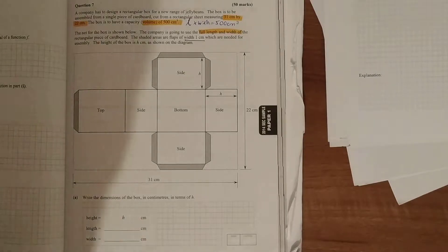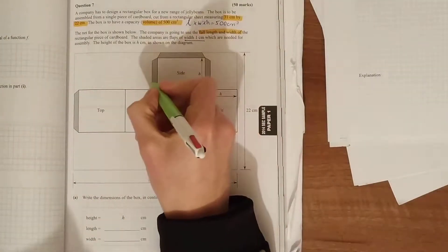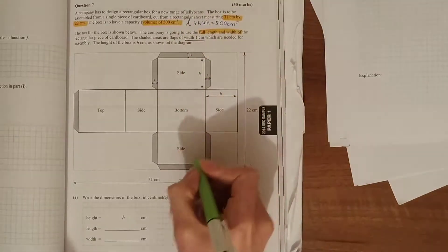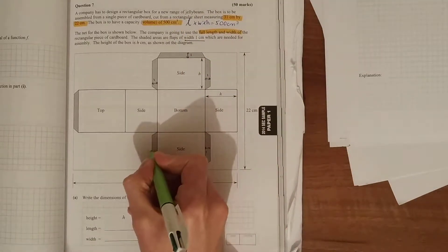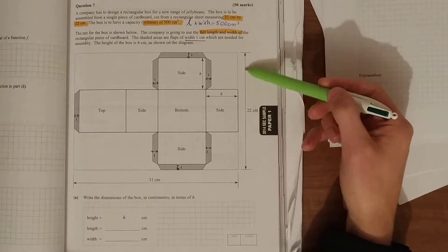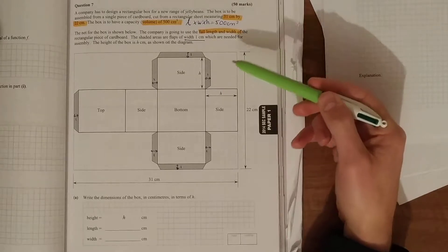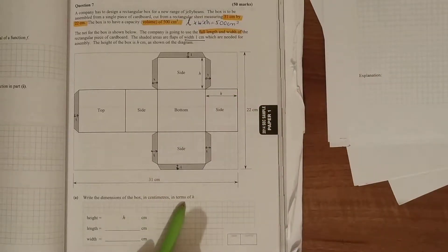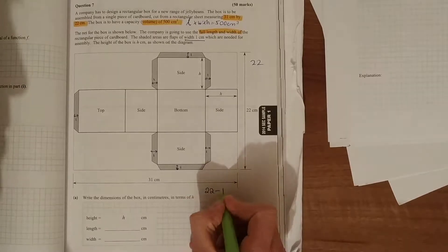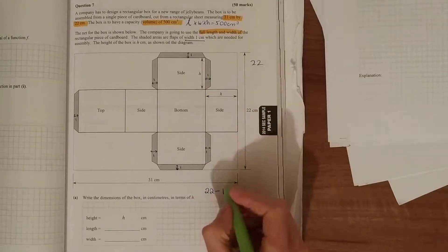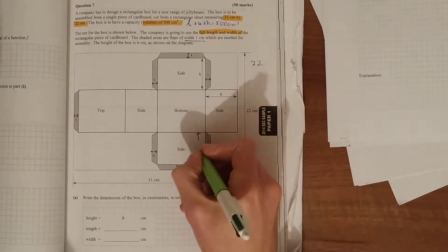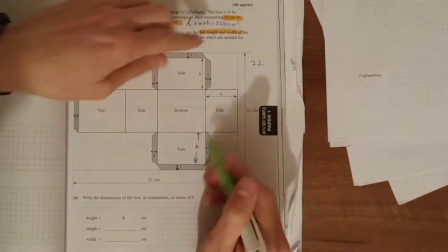Now write the dimensions of the box in centimeters in terms of h. So here we see that each of these flaps is 1, which it told us - the shaded areas are flaps of width 1. So there's another 1, there's another 1, 1, 1 and 1. If our total width here is 22 centimeters and we want to get the dimensions of the box in terms of h, we have 22 in total. So 22 minus 1 minus h minus 1 and minus another h, because here is h and down there is h, because the sides are going to fold up so they must be the same height.